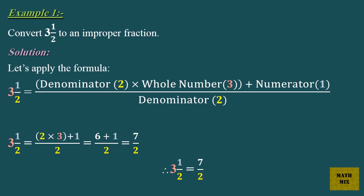Example 1: Convert 3 and 1 half to an improper fraction. Solution: Let's apply the formula. 3 and 1 half equals the denominator, 2, times the whole number, 3, plus the numerator, 1, over the denominator, 2.